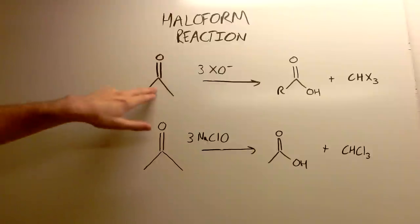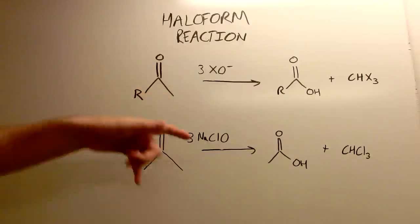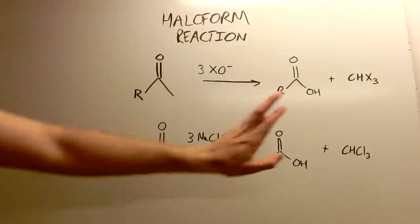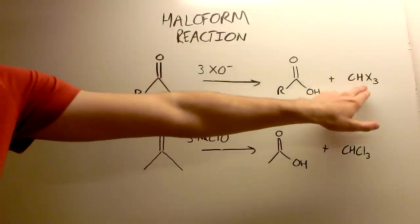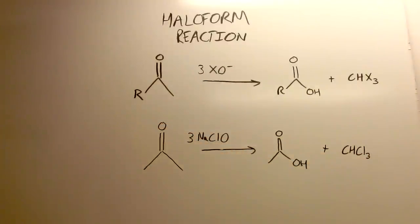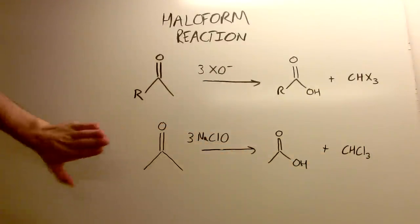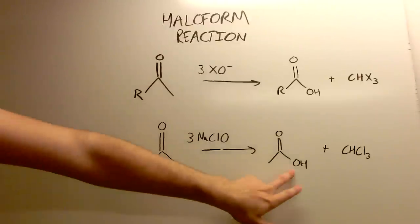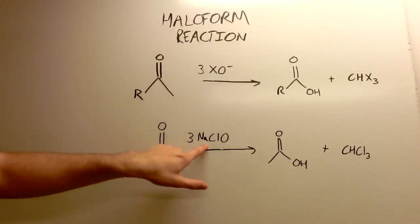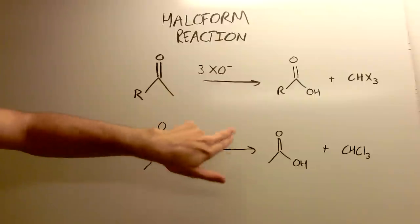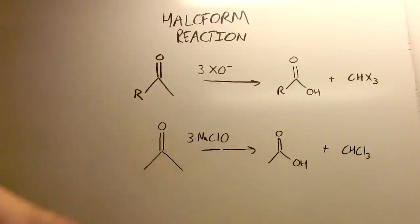The methyl group breaks off the ketone and you end up with a hydroxyl group in its place, so it forms the corresponding carboxylic acid, and then you're left with the trihalomethane. In this case, we'll be producing trichloromethane, which is chloroform. Our methyl ketone that we'll start with is going to be acetone — dimethyl ketone — and we're going to end up with the carboxylic acid. We'll use sodium hypochlorite as the hypohalite ion, and we'll end up with chloroform. So let's get started.